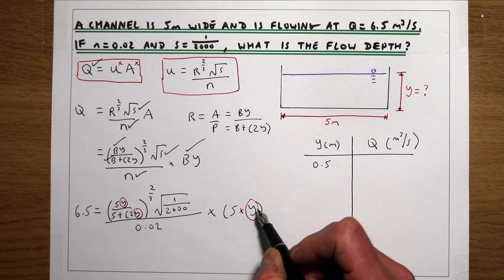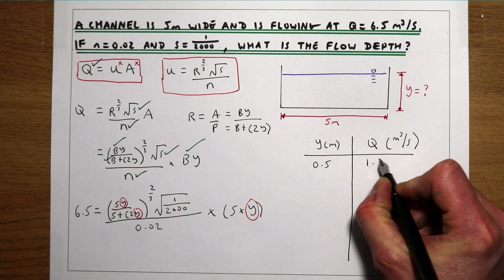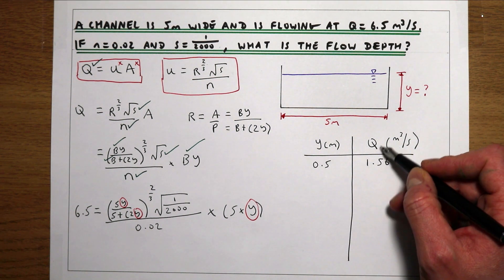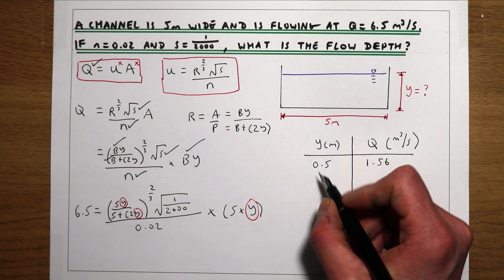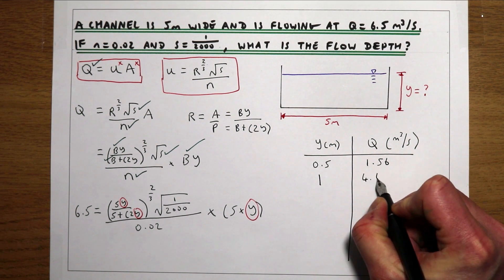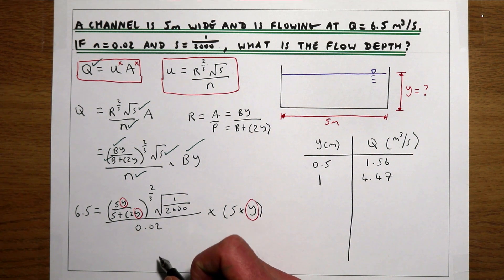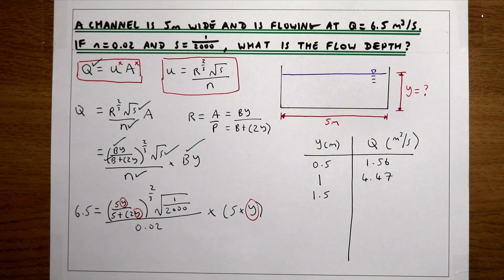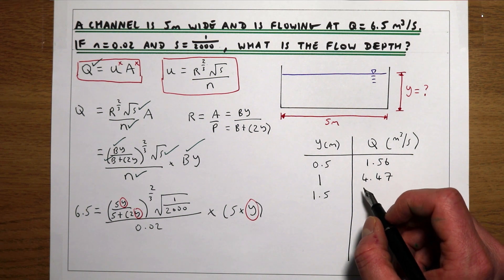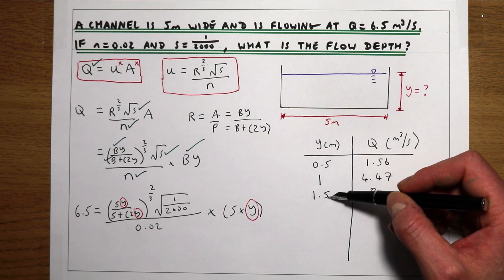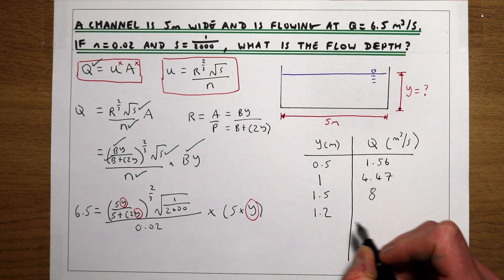If you plug 0.5 into this equation, it gives a flow of 1.56 m³/s. We need to increase the flow depth because our flow rate is smaller than needed. Increasing to Y = 1 metre gives a flow rate of 4.47 m³/s — still too small, so we need to increase further. Trying Y = 1.5 metres gives a flow of 8 m³/s, which is bigger than needed. So our flow depth is somewhere between 1 and 1.5 metres.